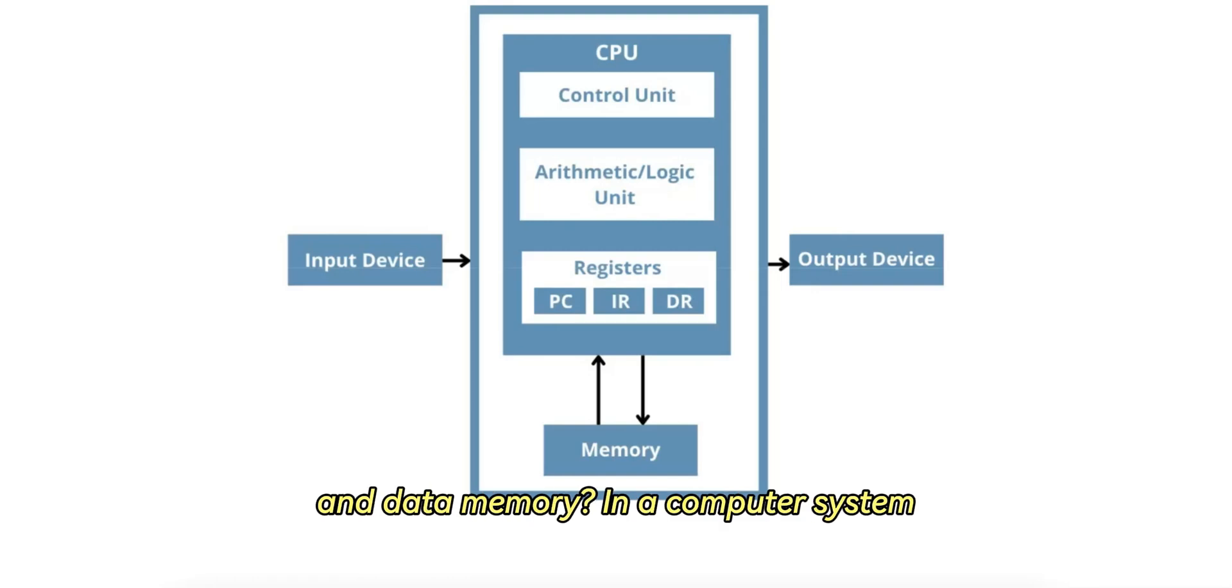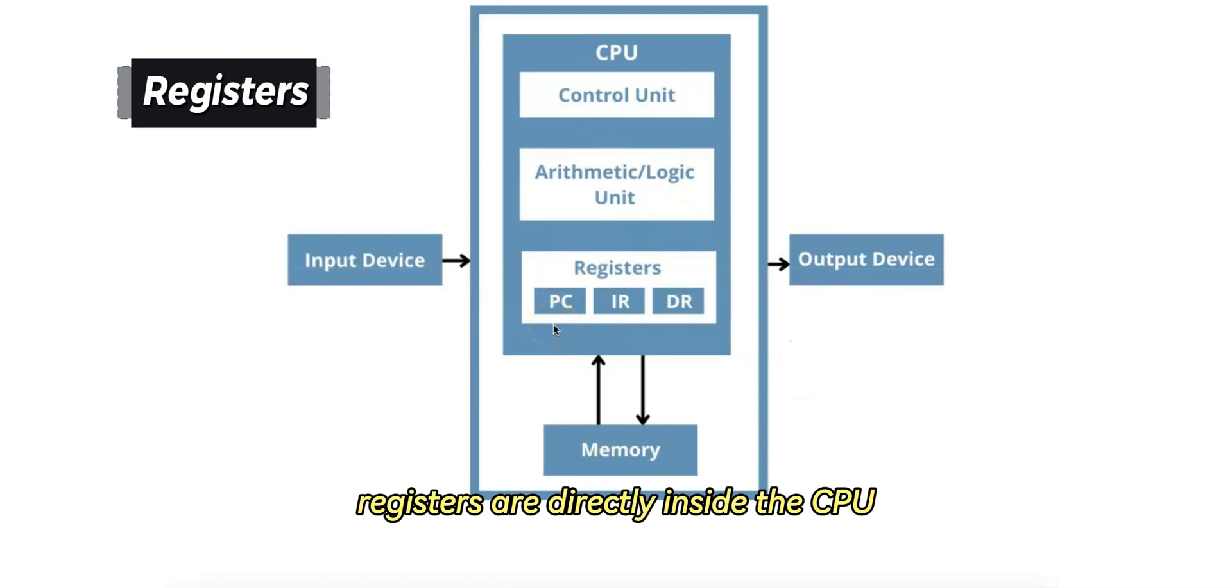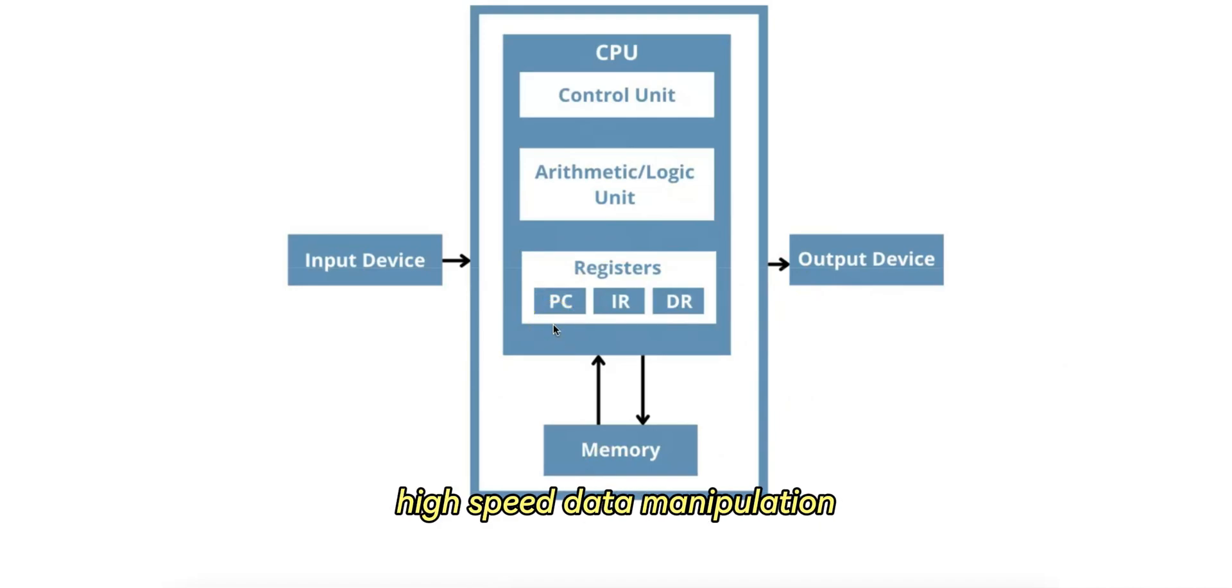What is the difference between registers and data memory? In a computer system, the registers are directly inside the CPU and are used for immediate, high-speed data manipulation.